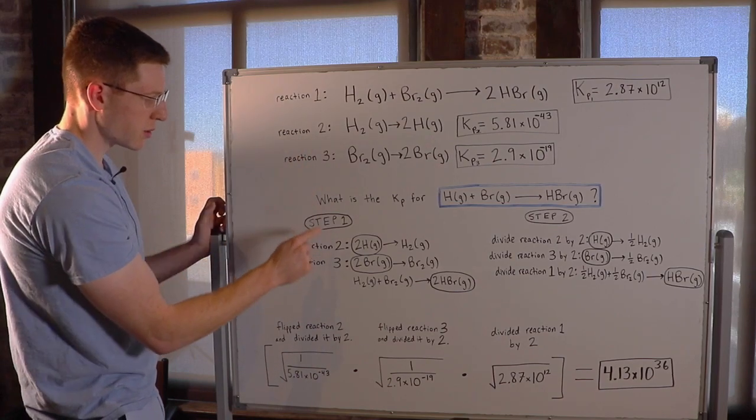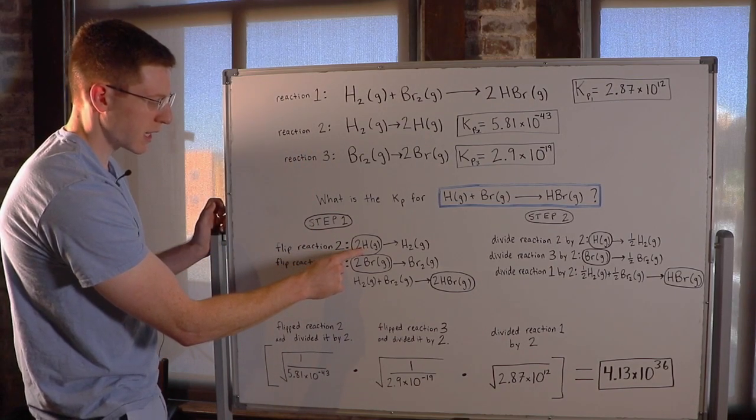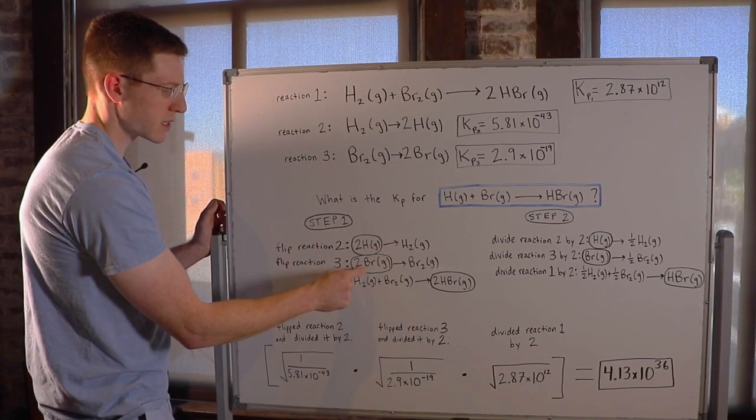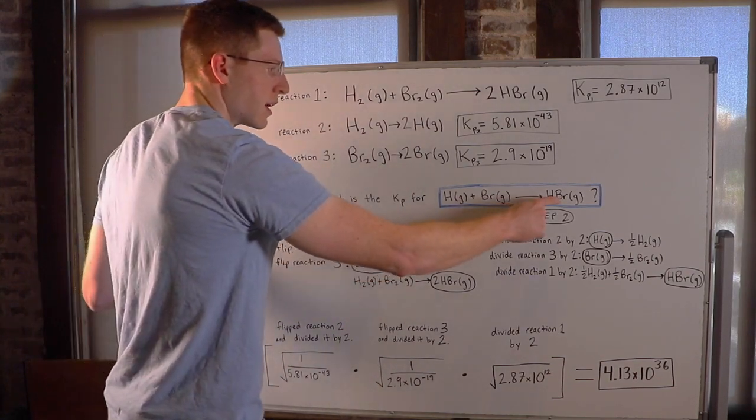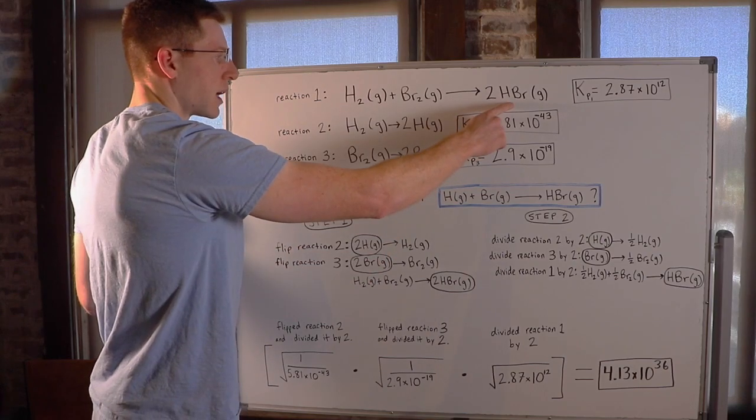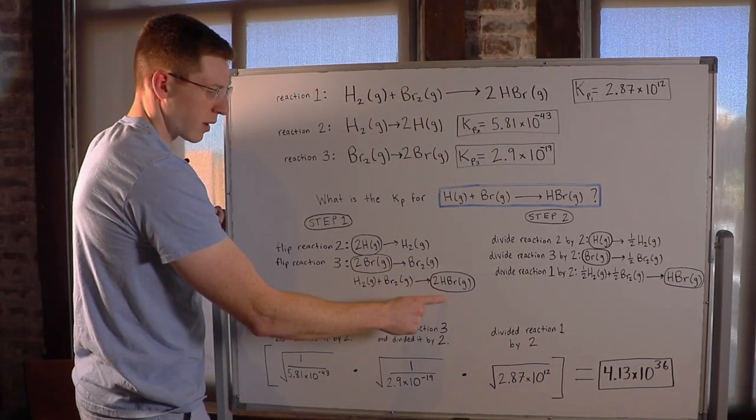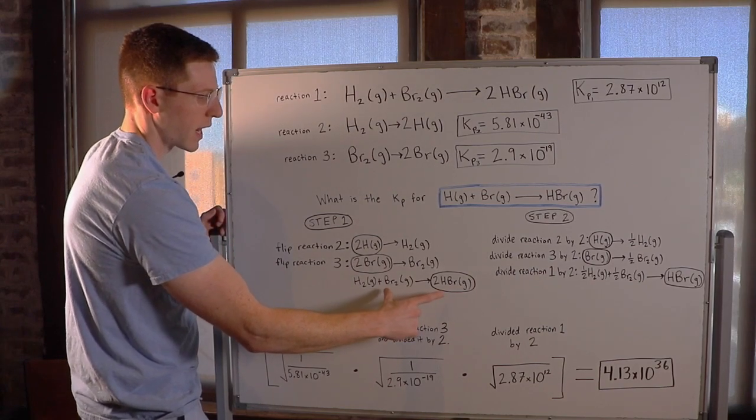So I flipped reaction 2 to get H on the reactant side, and then I flipped reaction 3 to get Br on the reactant side. Then I saw I needed an HBr on my product side. Reaction 1 already had an HBr on the product side, so I went ahead and just wrote reaction 1 as it was written.